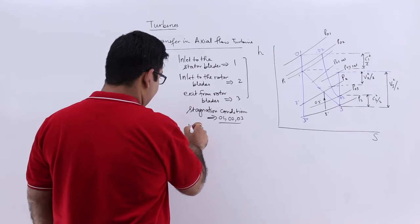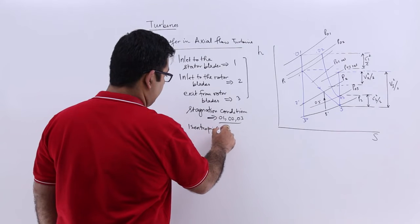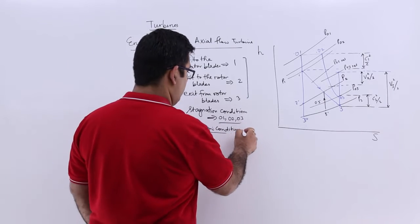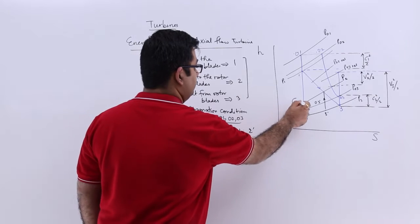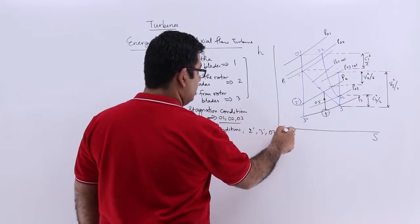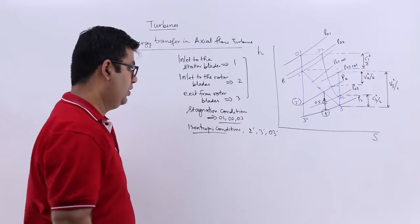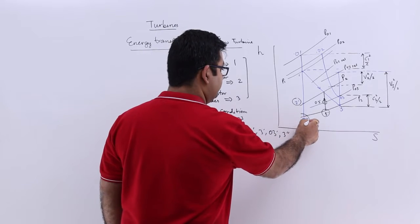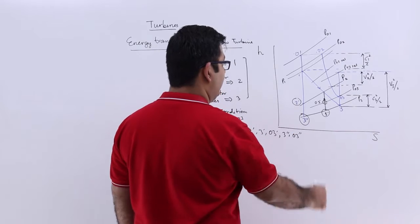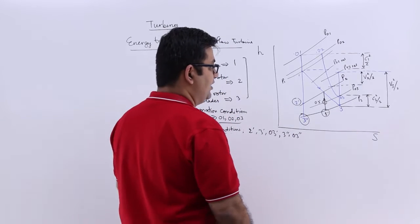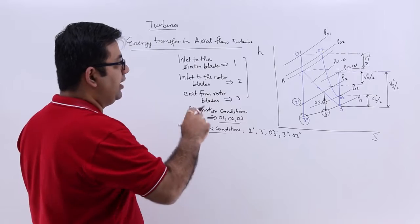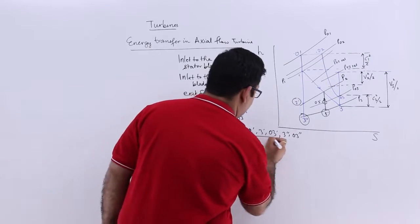Now we will talk about the isentropic conditions. They are 2 dash, then 3 dash. Then you have 03 dash, and 03 double dash. Note that 03 double dash is not demarcated on the chart here, and we will mark that while we go ahead in the analysis. So these are your isentropic conditions.